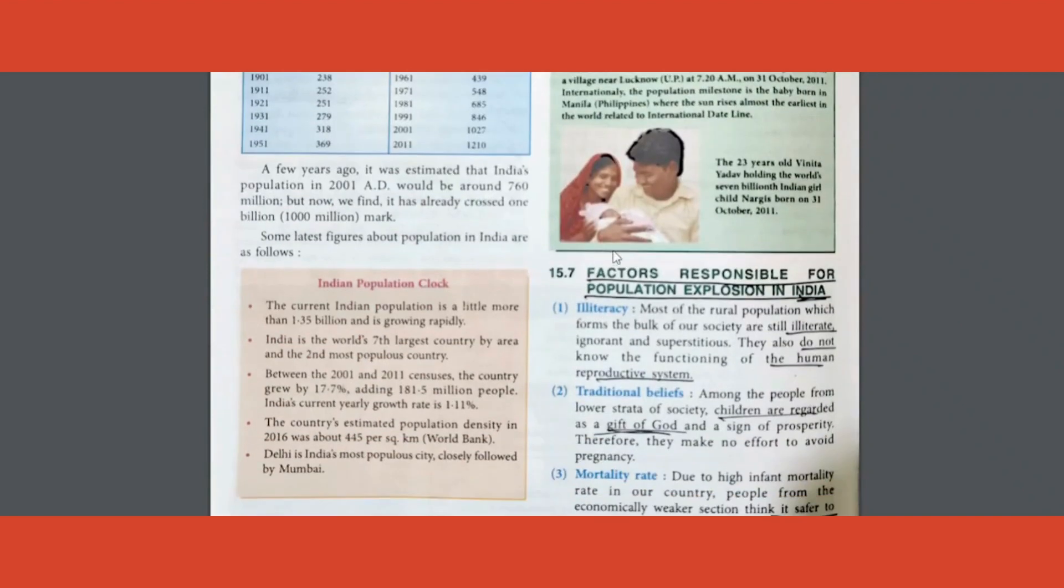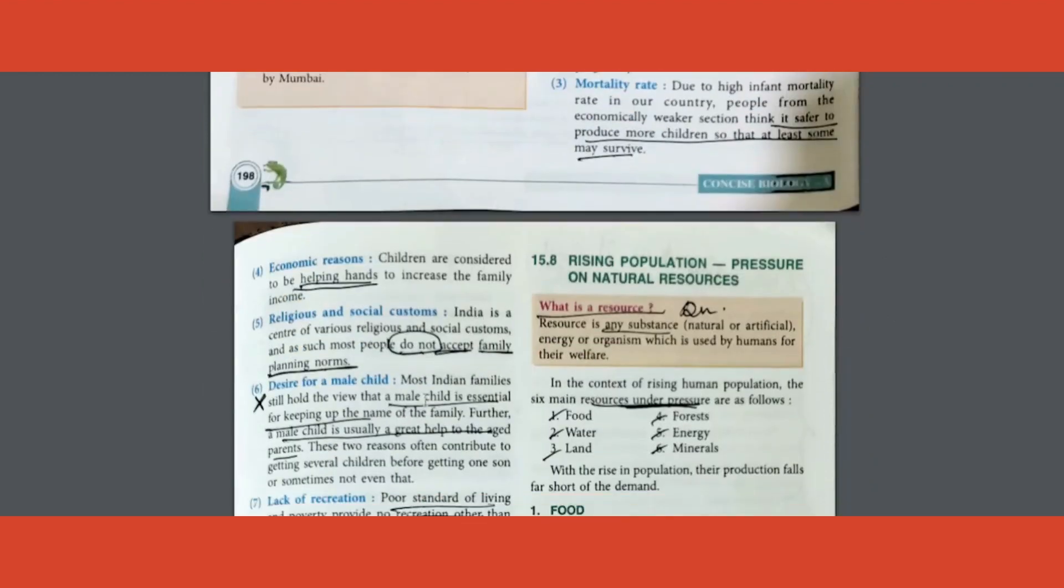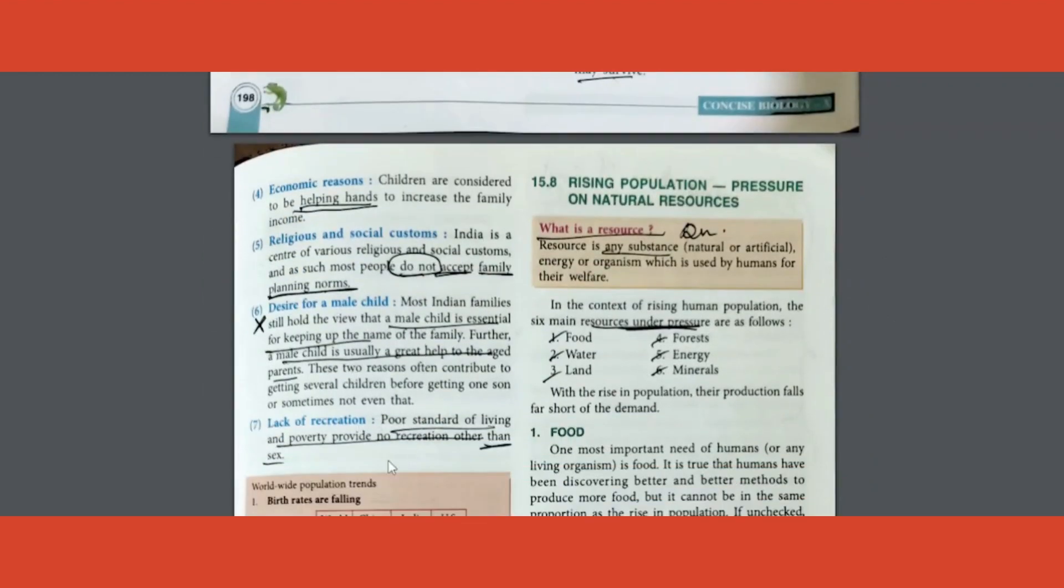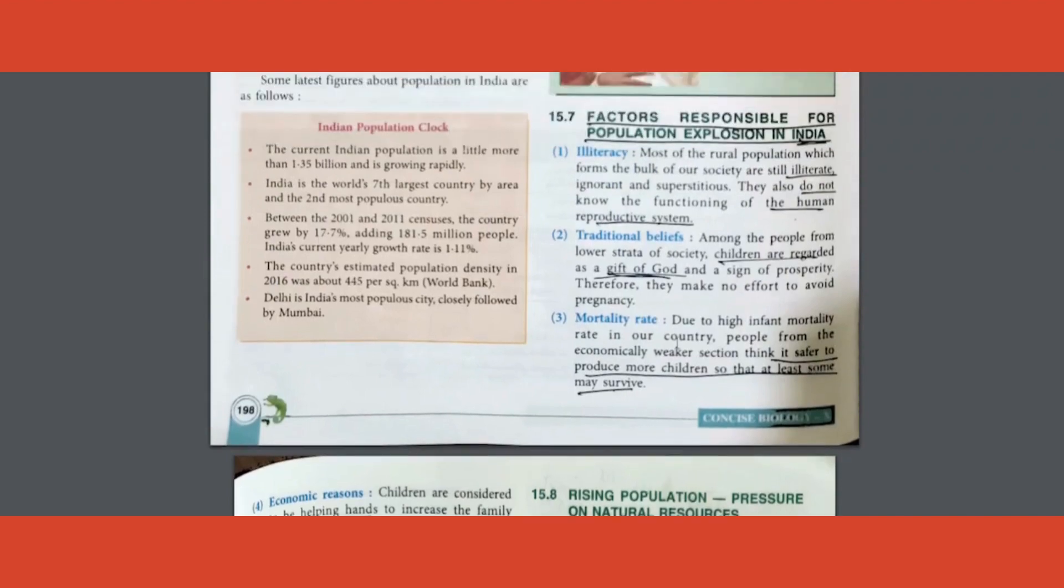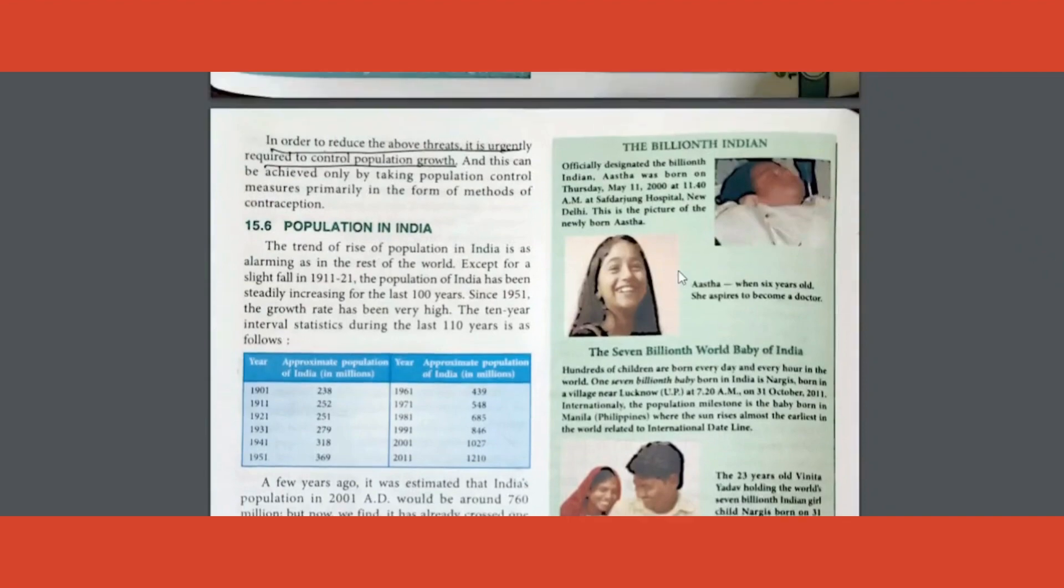Another one, the previous question we learned is population explosion all over, right, in the world. Here we're talking about specifically in India. There are around six, seven points given. Among the seven points, turn up at least four.